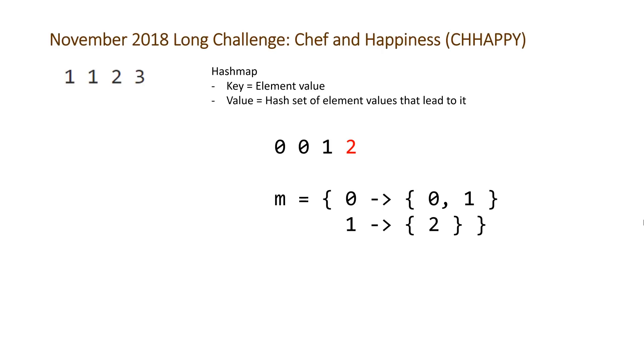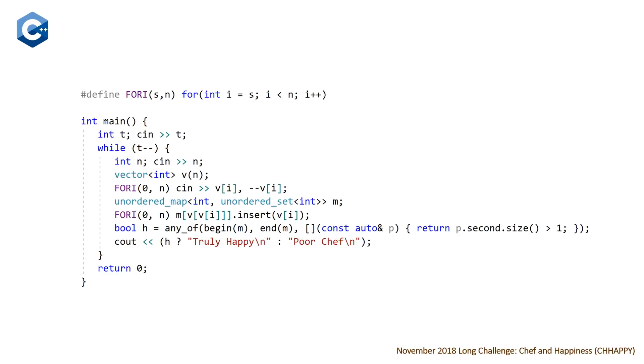So let's take a look at our code. Here is our C++ solution, we've got a macro at the top here, just to make it a little bit faster to write for loops. At the top of our main function here, we're reading in t, the number of test cases. And then for each test case, we're going to read in n, the number of values in our array. And then we're setting up a vector of integers here. And we're going to read in each one of the values on the second line of each test case. And note that we are doing a pre decrement here to get our values zero indexed. And then we're setting up our hash map here, m.